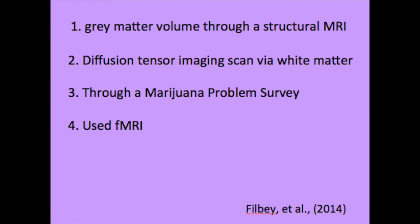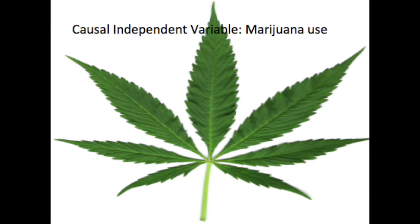The fourth measure used was a functional MRI. Philby et al. hypothesized that the cannabis group would show alterations in gray matter volume, functional connectivity, and structural connectivity. The causal independent variable is marijuana use at least four times per week over the last six months, confirmed through urinalysis.